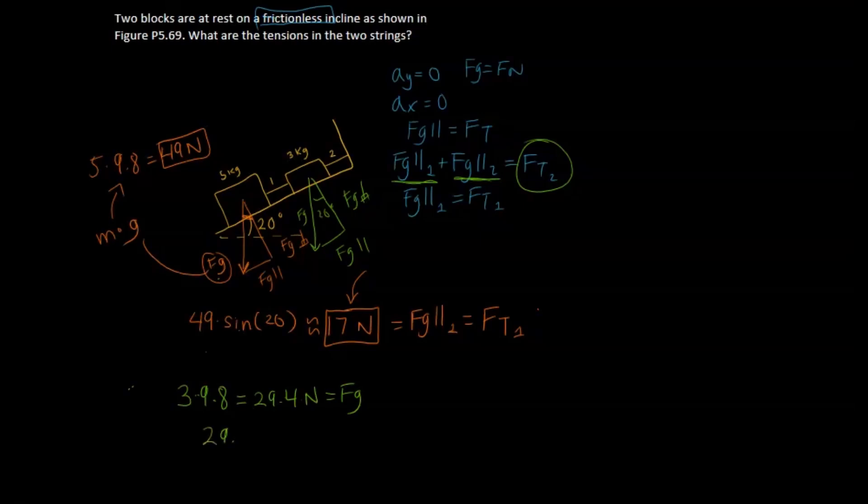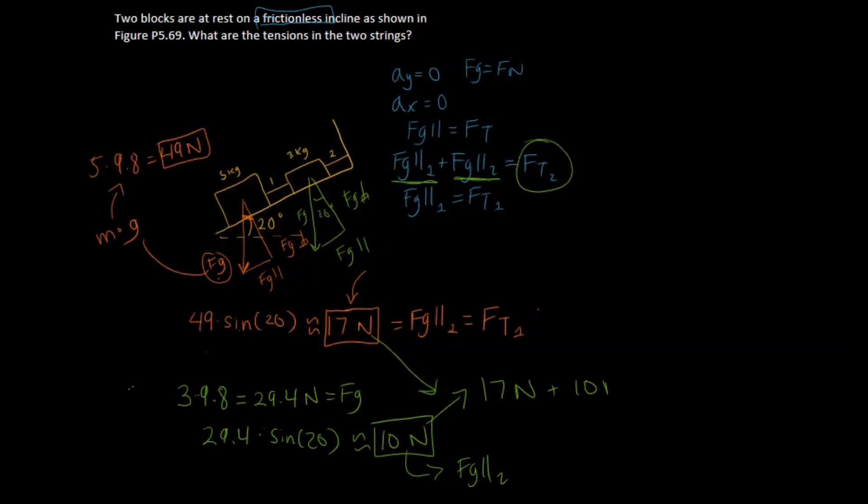And so now we can use trig to be 29.4 times sine of 20, and that gives us approximately 10 newtons. And that makes sense because if we were just looking at these individual components, the 5 kilogram block is heavier than the 3 kilogram block, so it makes sense that there's a greater force that's bringing it down. So 10 newtons is Fg parallel 2, and if we do 17 newtons plus 10 newtons, we get the force of tension of string 2. That gives us about 27 newtons.